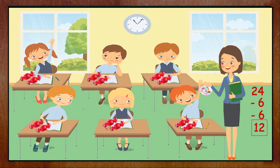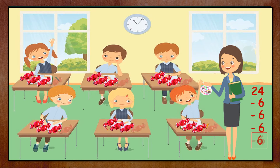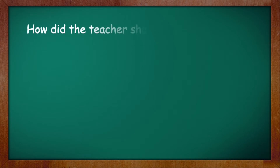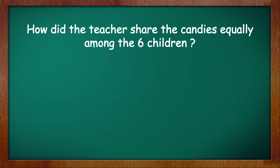She takes out six more candies and distributes one each for the third time, and now she is left with only six candies — that is one each for the six children. The class teacher is happy that she was able to share the candies equally among the children, and the children are also happy that they have got four candies each. The class teacher kept distributing one each till there were no more candies left in the box.